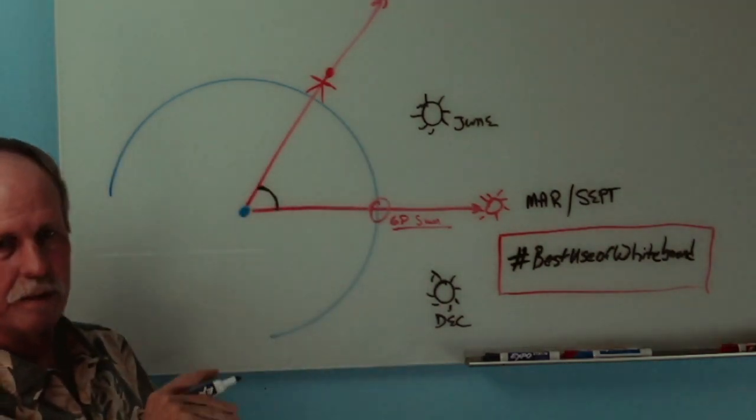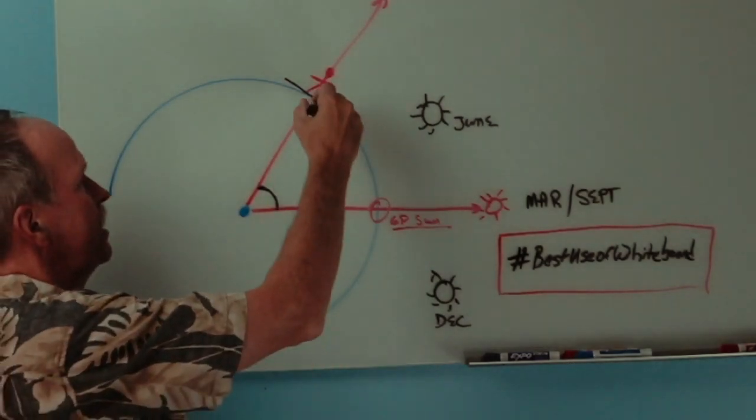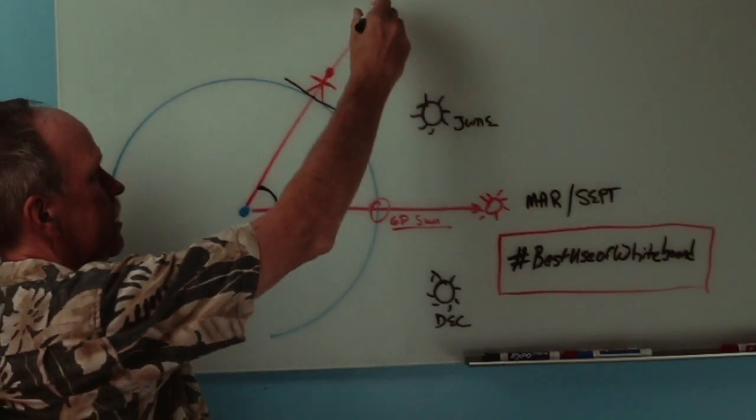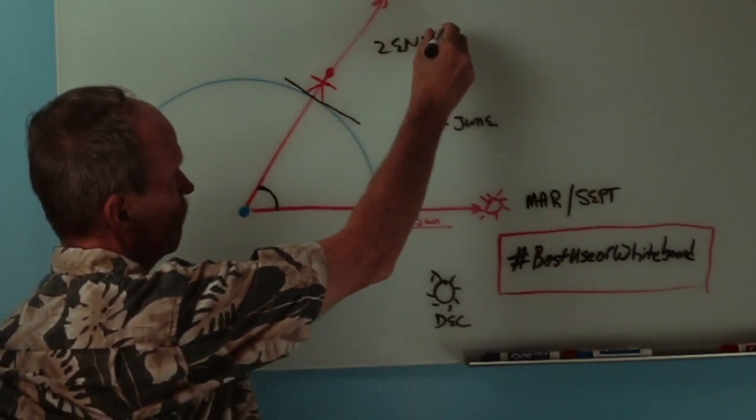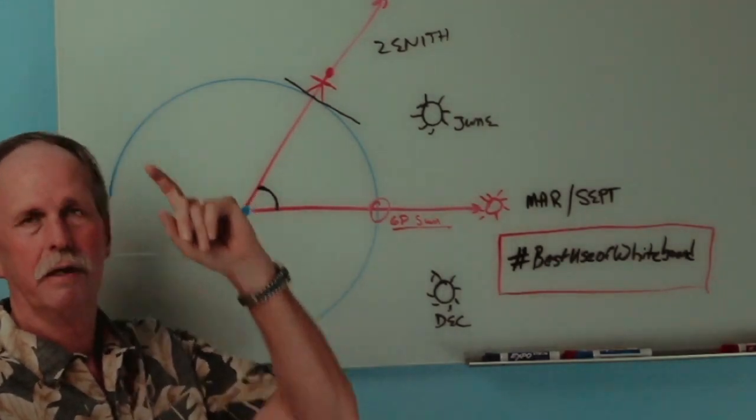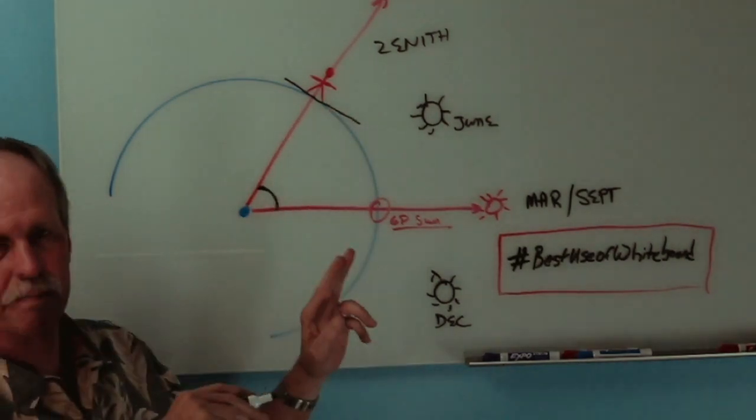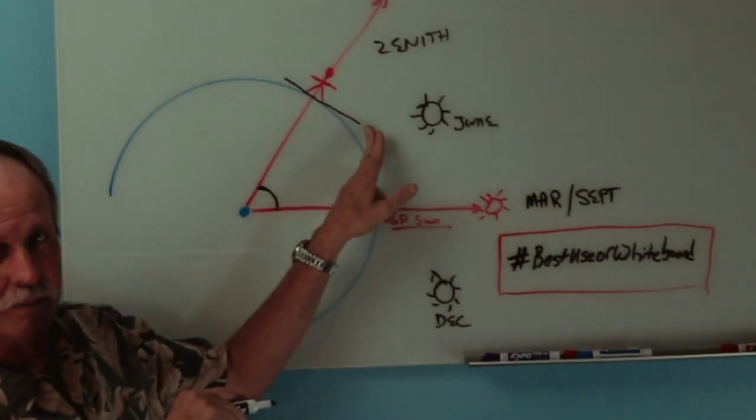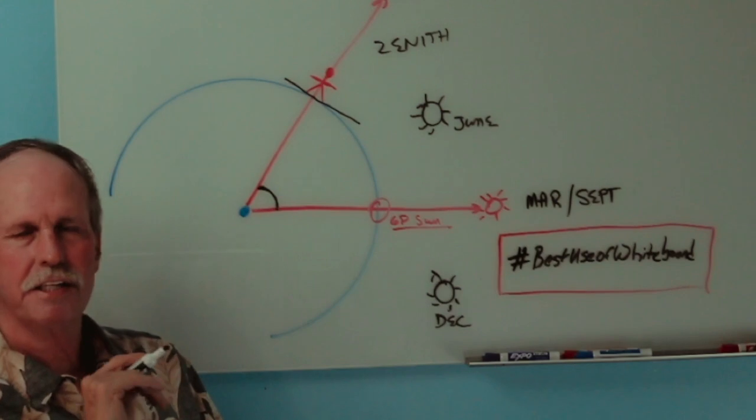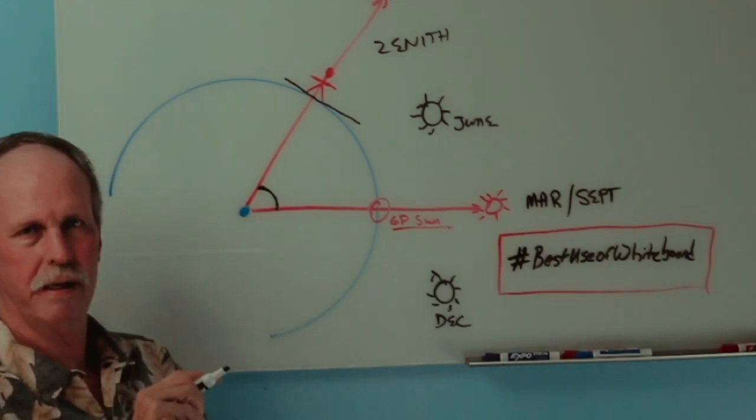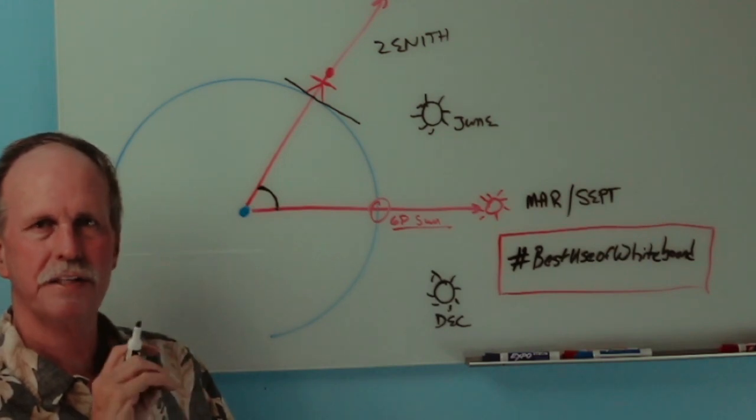So here we are with our sextant, and we're going to draw a couple of lines. The first one is a tangent line to the surface of the Earth, and it's right like that. Perpendicular to it is an extension of the radius of the Earth that goes through our feet. So this direction is called our zenith. And standing on the Earth, that would be directly over our heads.